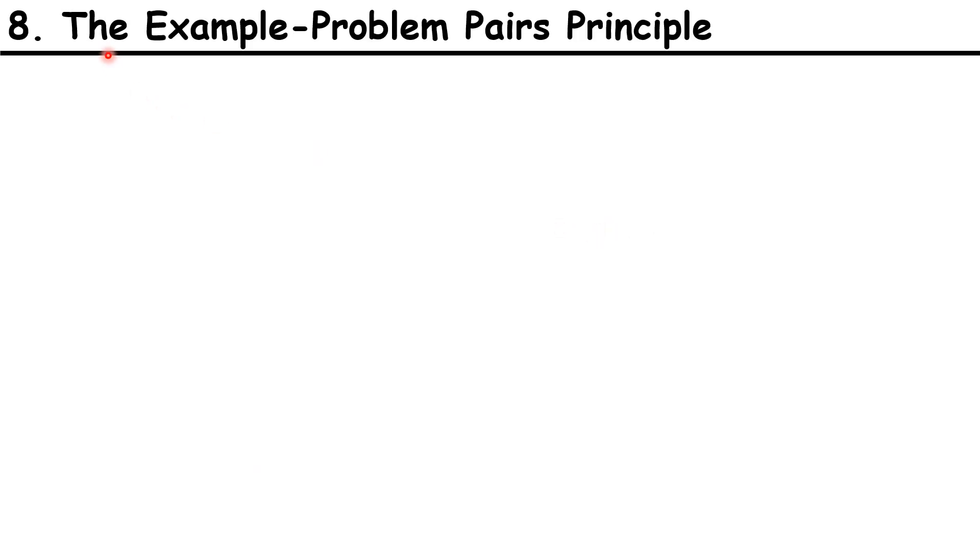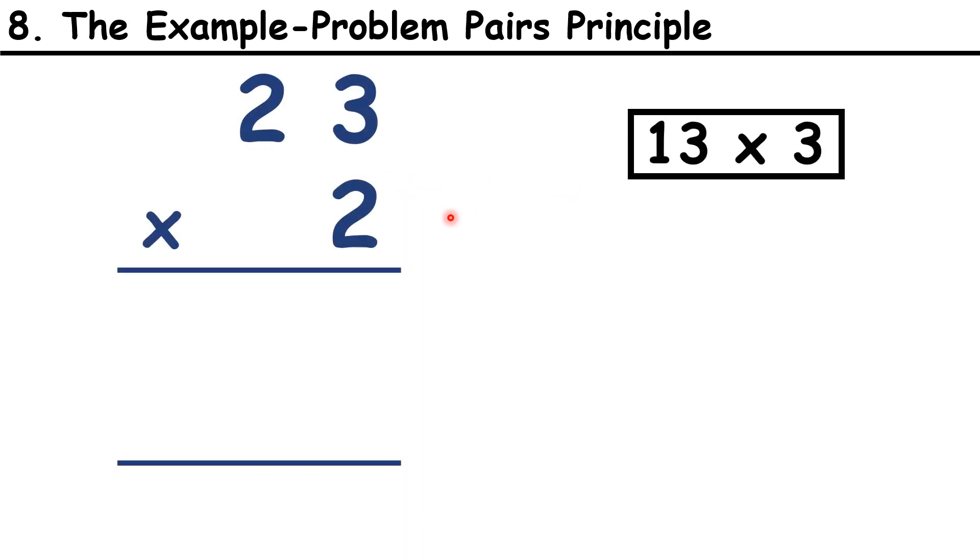Our next principle, the Example Problem Pairs Principle, is about asking children to solve a similar question alongside a worked example. So, explain how to solve a problem one step at a time, but after each step, check that children can apply the methods to a similar question.